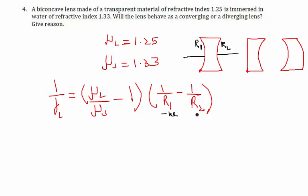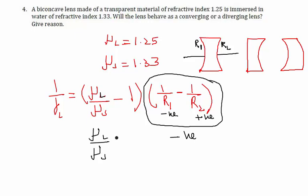Now r2 would be positive, so ultimately this whole factor would be a negative quantity. Very interestingly, because this is the fraction mu_L upon mu_s, and mu_L upon mu_s is less than 1, this quantity will also be a negative quantity.